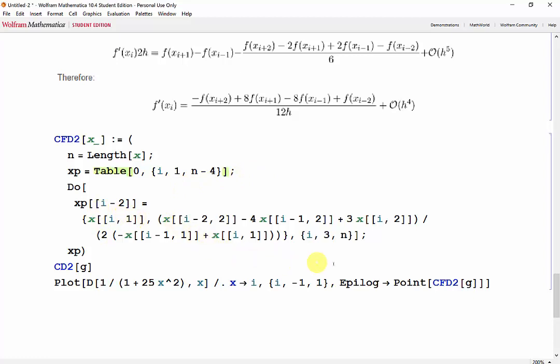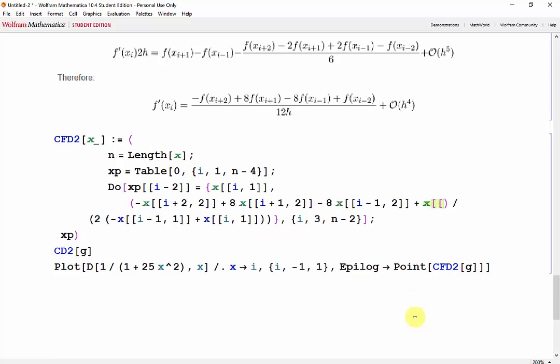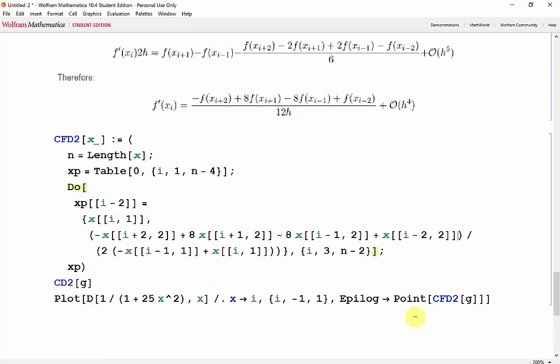And now modifying the equation, you go all the way up to n minus 2 from 3. We have a negative f of x_{i+2}, a positive 8 f of x_{i+1}, a negative 8 f of x_{i-1}, and a positive f of x_{i-2}. Then we have 12 times the step size.